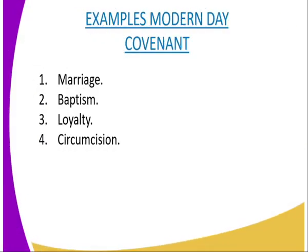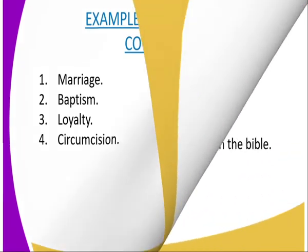We also have examples of modern covenants — the covenants we have today. Examples include marriage, which is a covenant between a man and a woman. There is also baptism, which is a modern covenant. We have loyalty covenants like the selling of land, and we also have circumcision. Those are examples of modern day covenants.